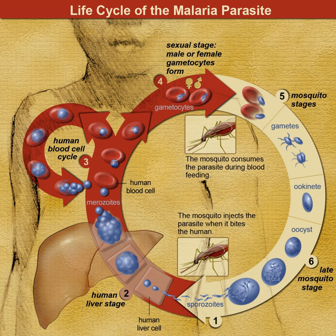Mosquito malaria theory, or sometimes mosquito theory, was a scientific theory developed in the latter half of the 19th century that solved the question of how malaria was transmitted. The theory basically proposed that malaria was transmitted by mosquitoes, in opposition to the centuries-old medical dogma that malaria was due to bad air or miasma. The first scientific idea was postulated in 1851 by Charles E. Johnson, who argued that miasma had no direct relationship with malaria.